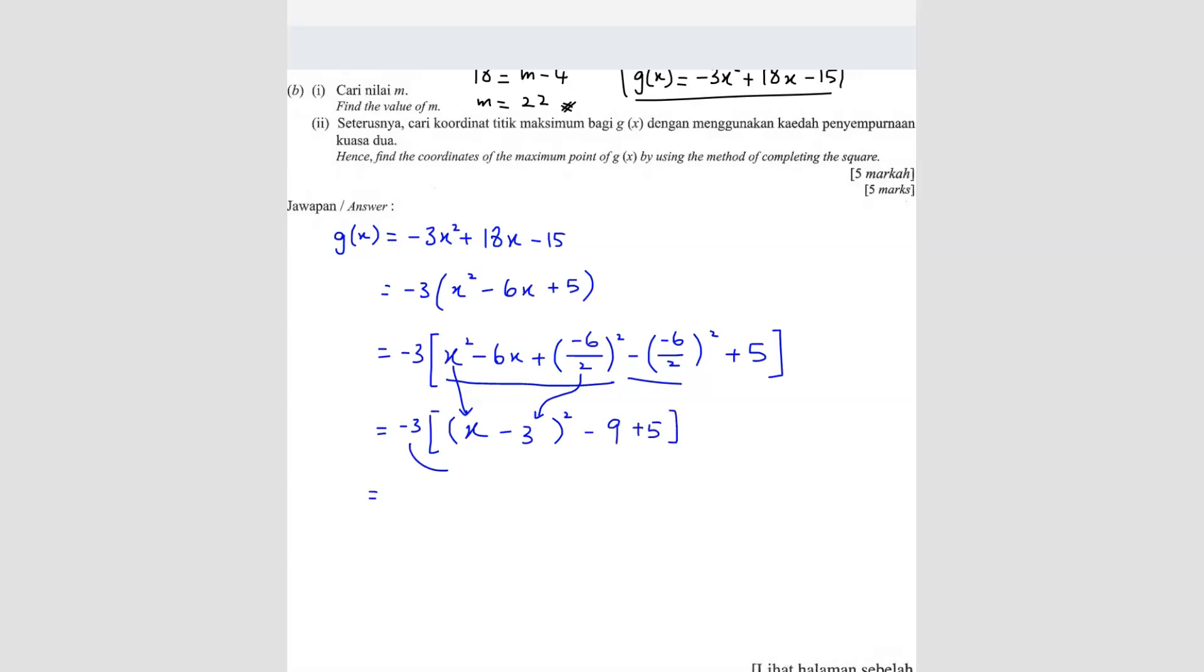So when you expand this again, when you expand, you will get -3(x-3)². -9 + 5 is -4 times -3, you get 12, yeah, positive 12.